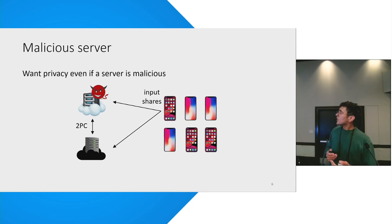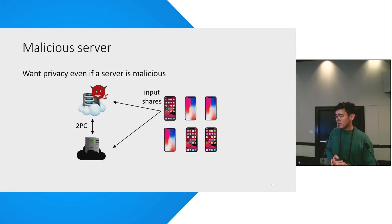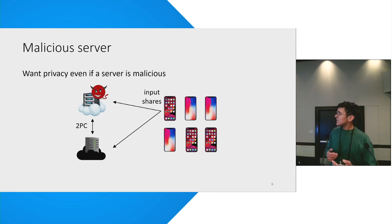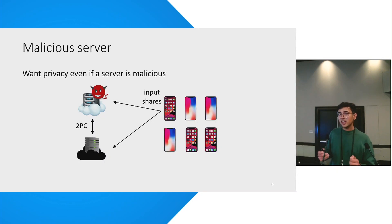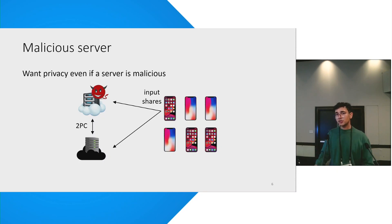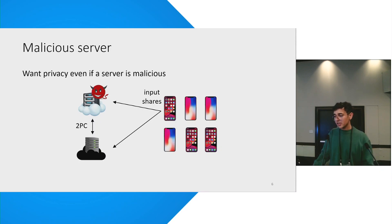We have a lot of client devices and two servers on the left — one of them can be malicious. Each client secret shares its gradients to the two servers, and then the two servers run a 2PC protocol between them to make sure the gradients are well-formed.